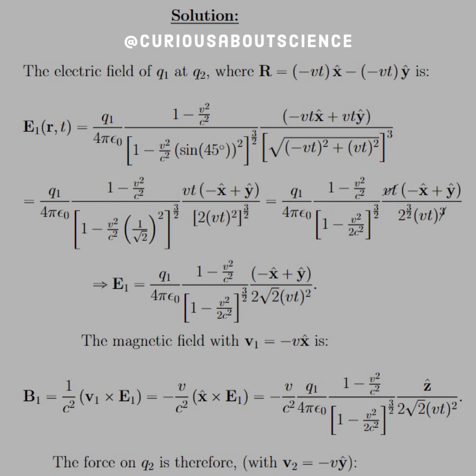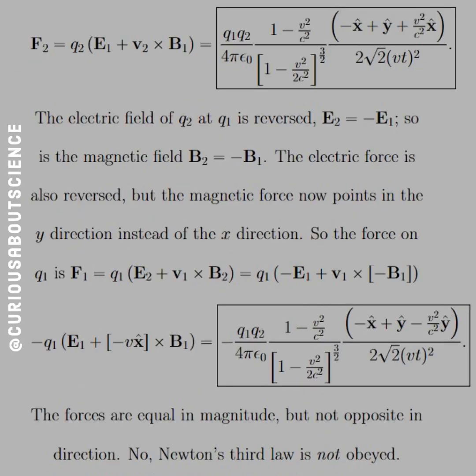The force on Q2, with v2 equals negative V y-hat, is F2 equals Q2(E1 + v2 cross B1). We have Q1Q2 over 4πε₀ times (1 − V²/c²) over [1 − V²/(2c²)]^(3/2), times 1 over 2√2(Vt)². The direction is (−x̂ + ŷ + V²/c² x̂), where the x and y components come from the E-field and the V²/c² x-hat from the cross product.